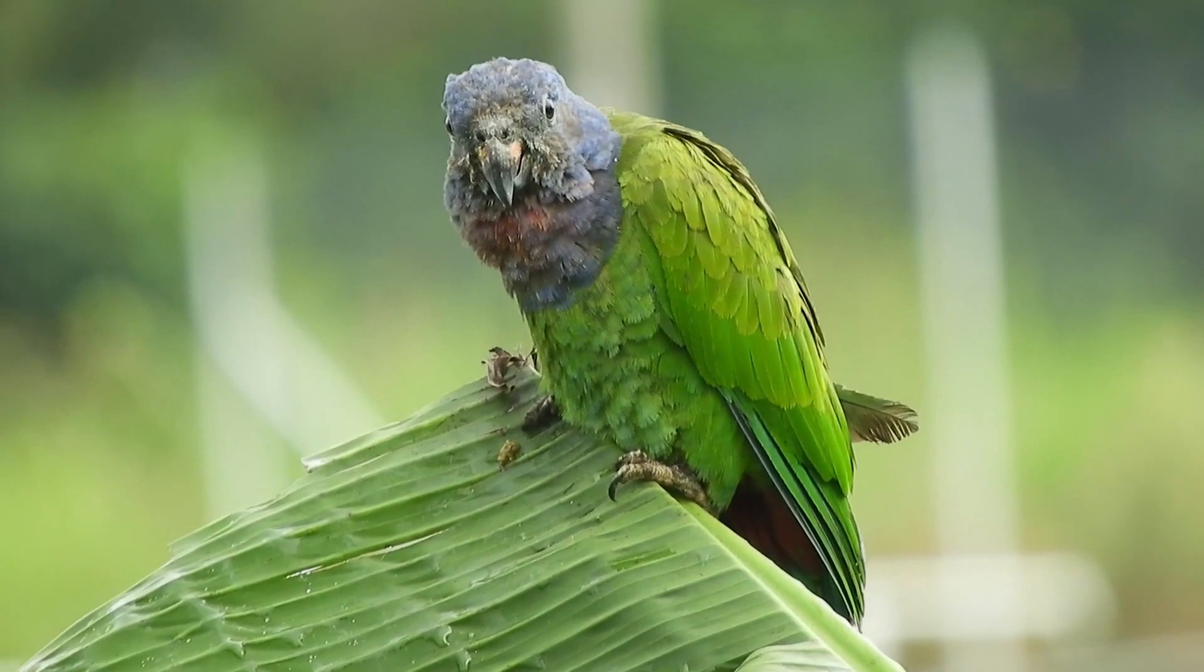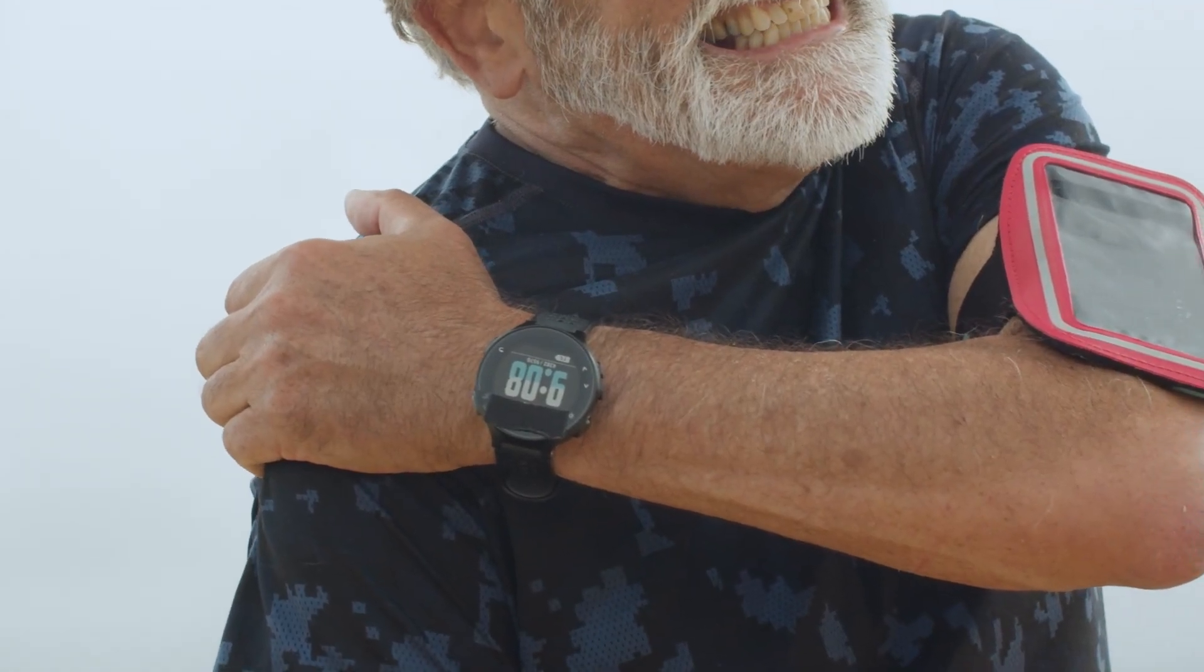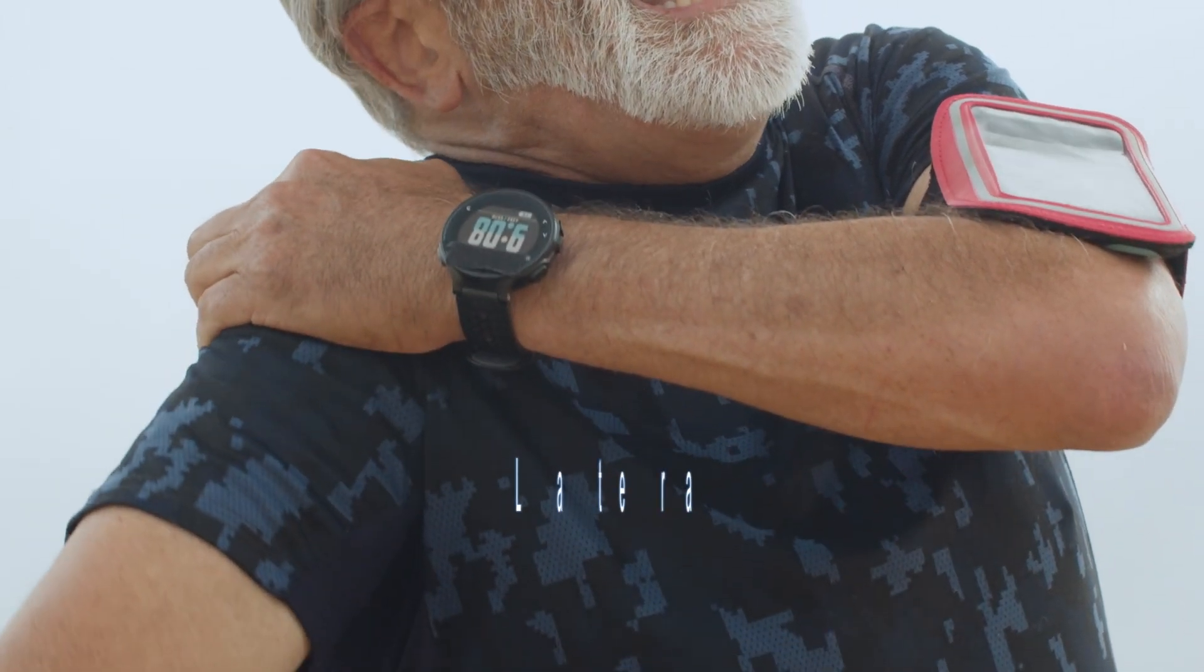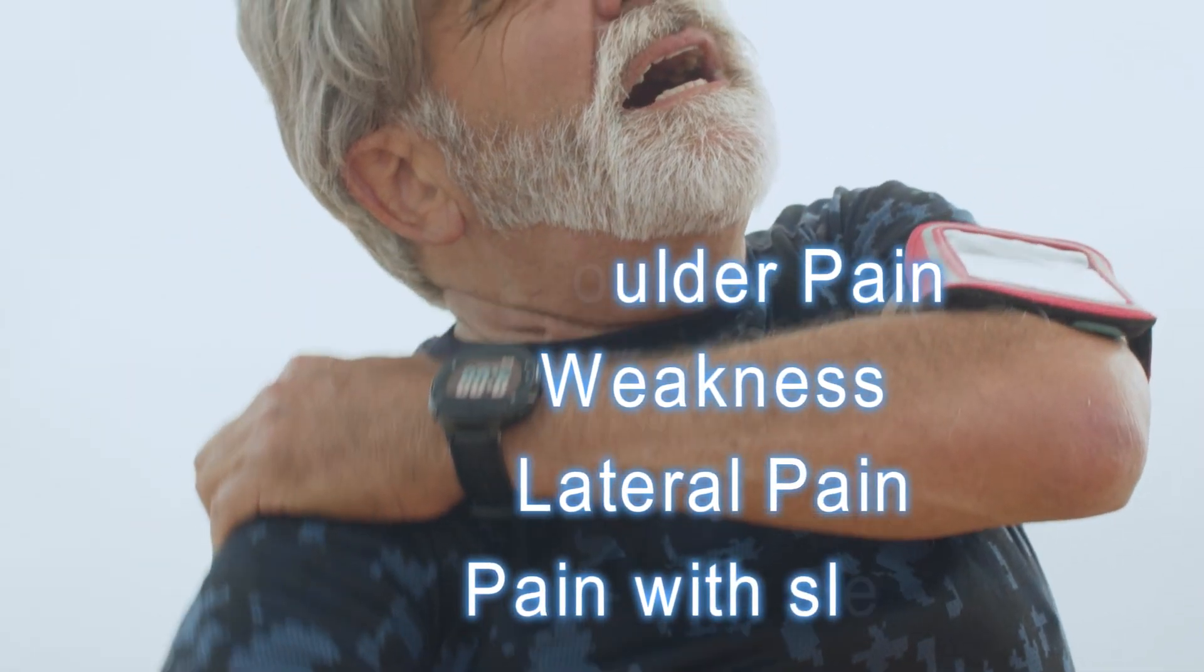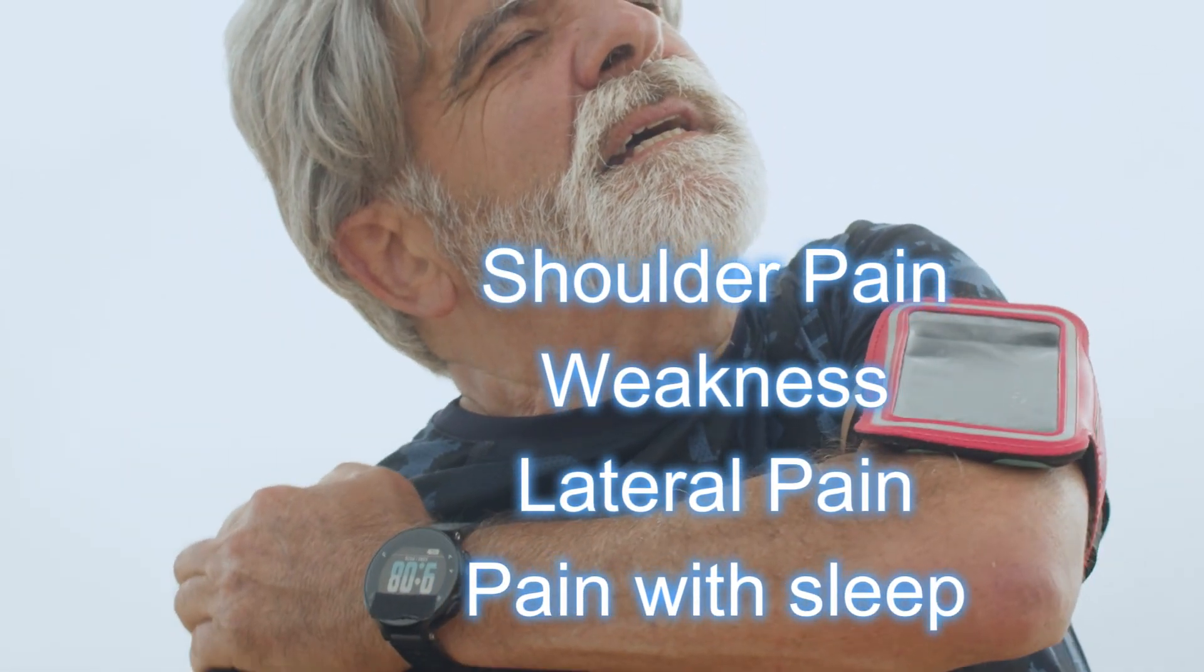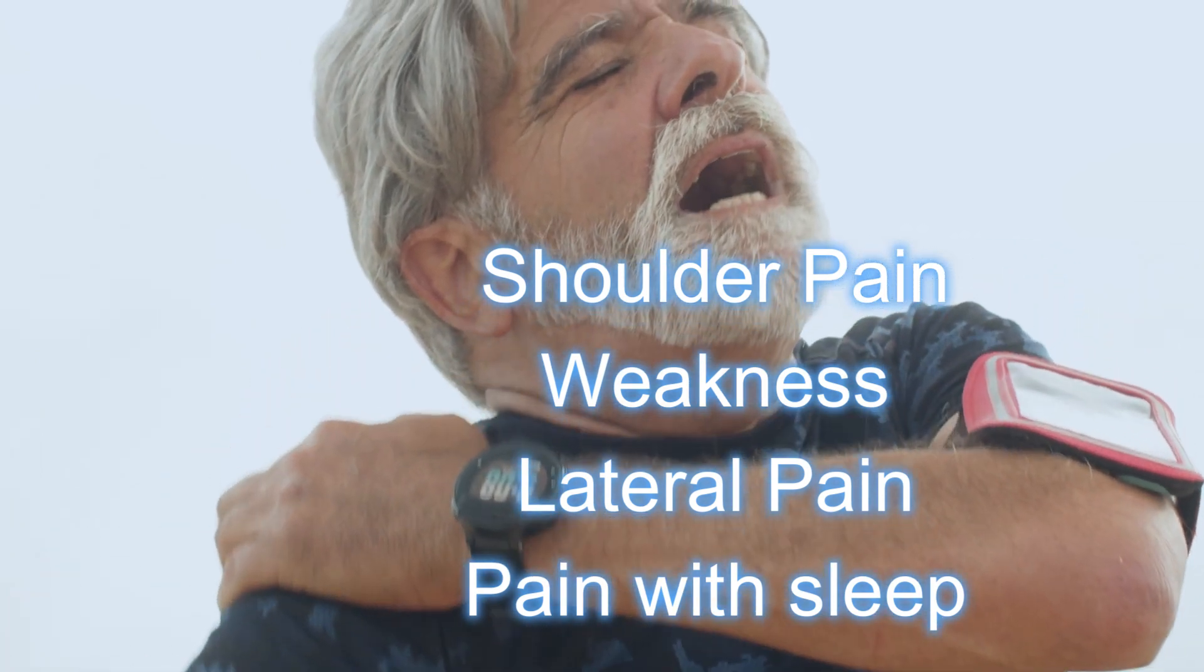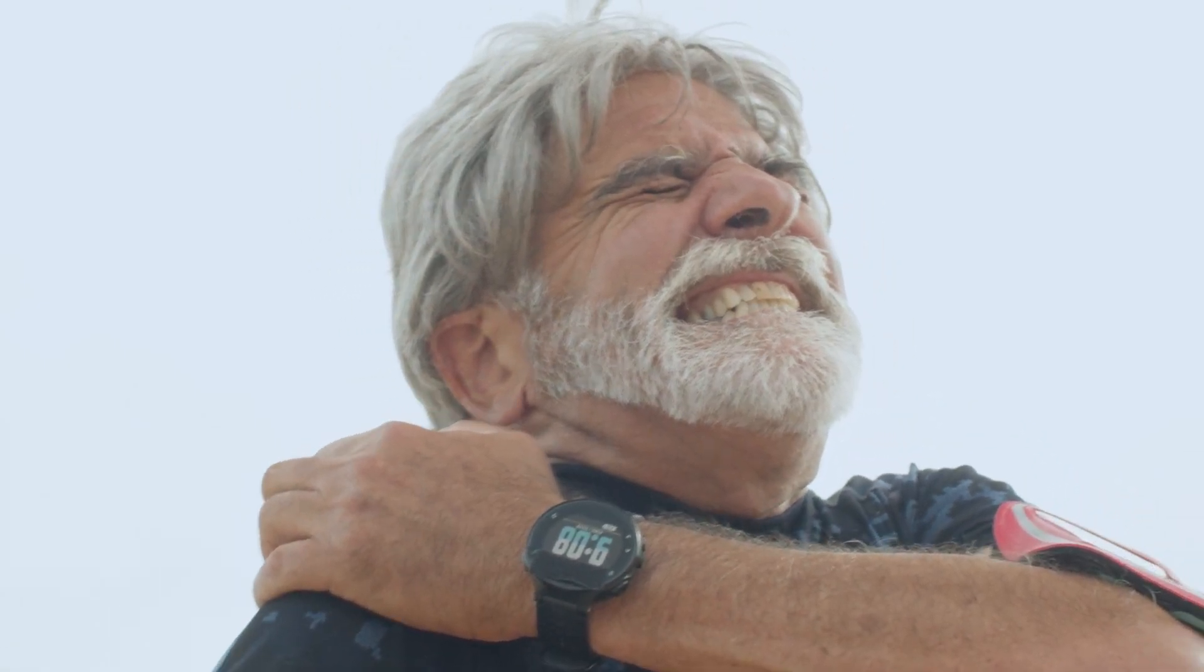When evaluating for a rotator cuff tear, your patient might have shoulder pain, or more likely they'll have weakness in the shoulder. They'll have pain on the lateral edge of the shoulder, especially at nighttime when they're sleeping. And they'll have difficulty, depending on the rotator cuff injury, they might have difficulty reaching up over their head or reaching behind their back.